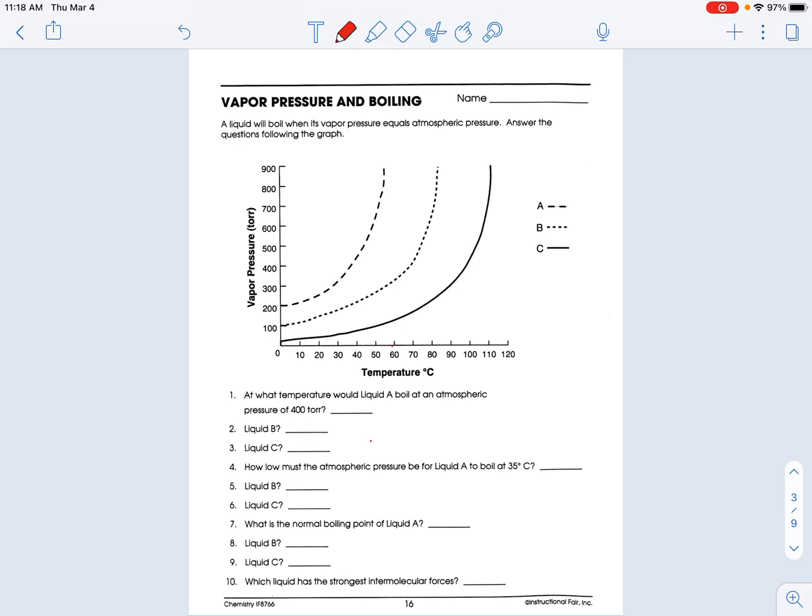Now, I don't love this graph because it's in torr, which is not what we normally use. But don't forget that we have 101.3 kilopascal and 1 atmosphere, which is on the reference table. We also know that 760 torr and 760 millimeters of mercury, those are all standard pressure. So 760 torr is standard pressure.